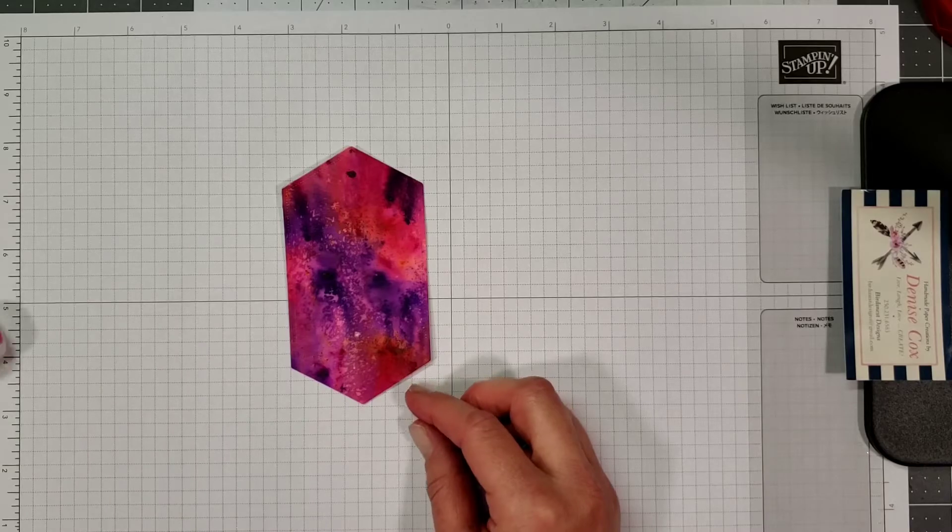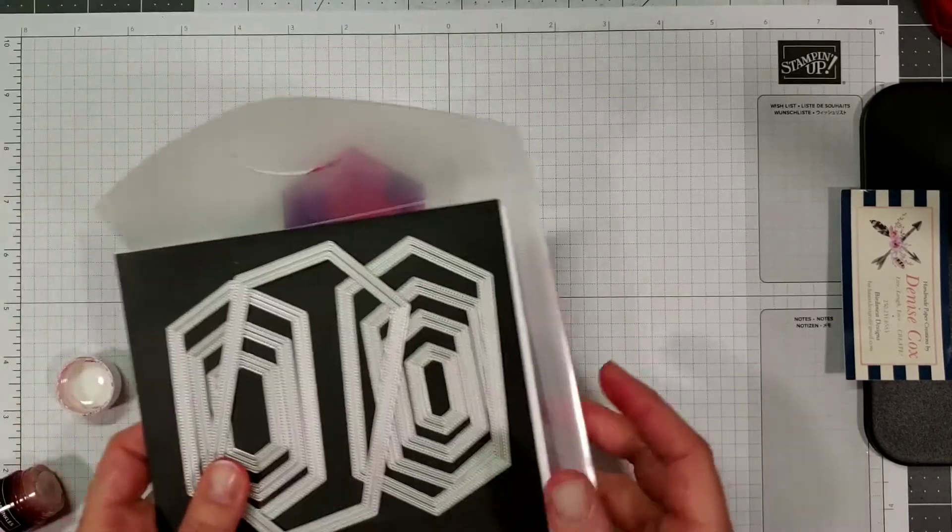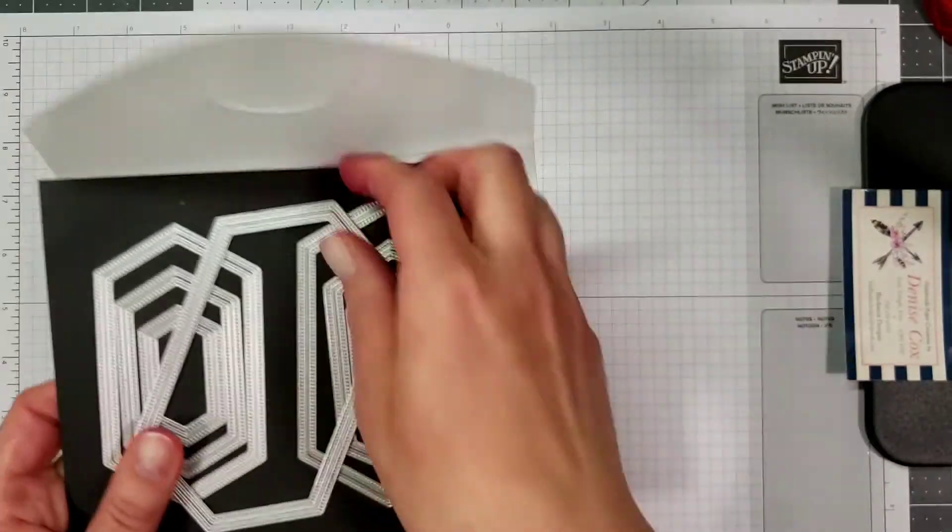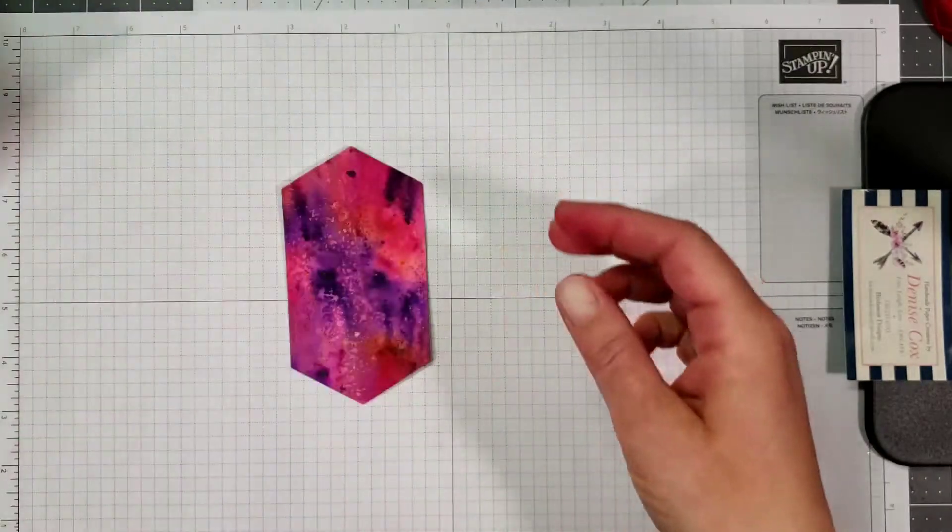So you can see I've cut it out using the stitched nested labels dies here. I've used the biggest one right there. I've just run it through the big shot.